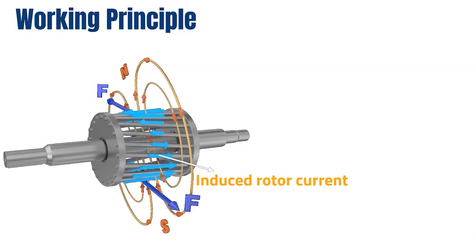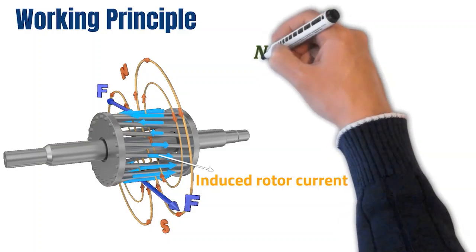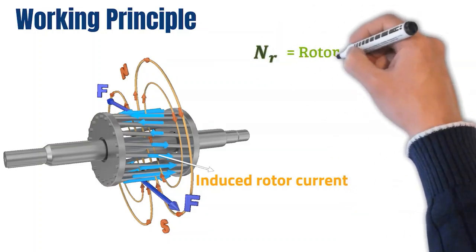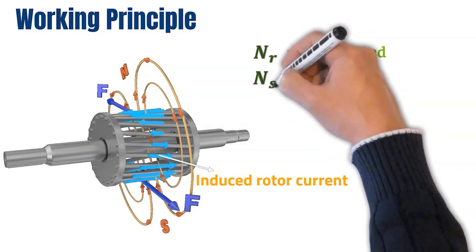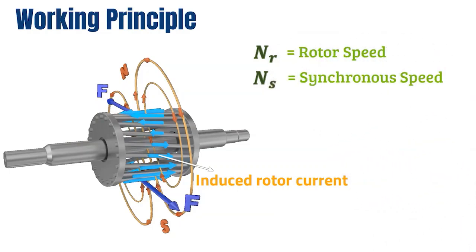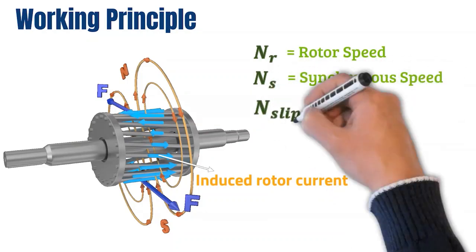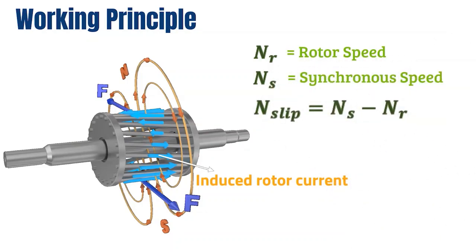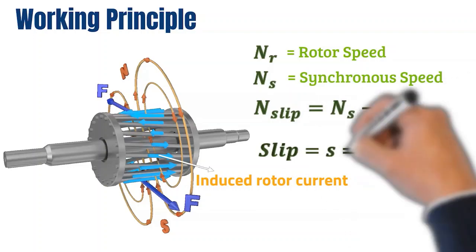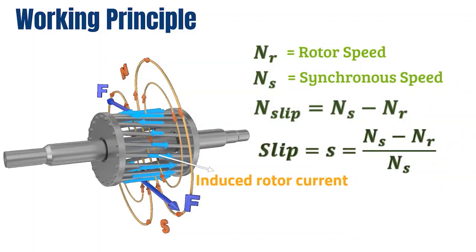One of the major observations of the induction motor is that it can never attain or exceed synchronous speed. If the rotor speed is Nr and the synchronous speed is Ns, then the speed of the magnetic field sensed by the rotor to create torque is Ns minus Nr. This is known as the slip speed. The ratio between slip speed and synchronous speed is known as slip, and the relationship between rotor speed and synchronous speed can be obtained from this.